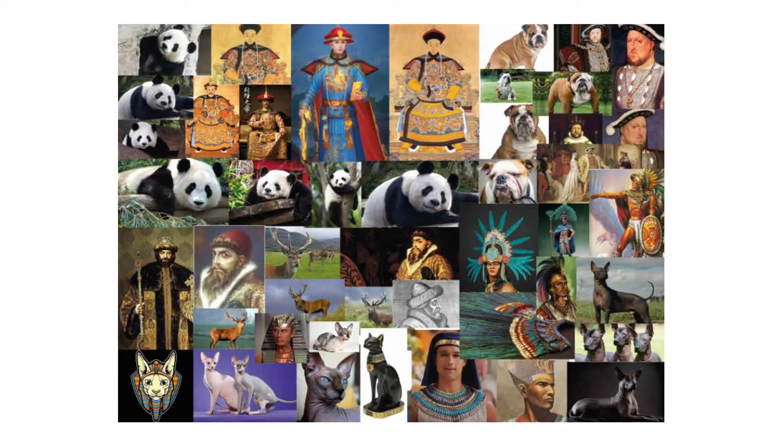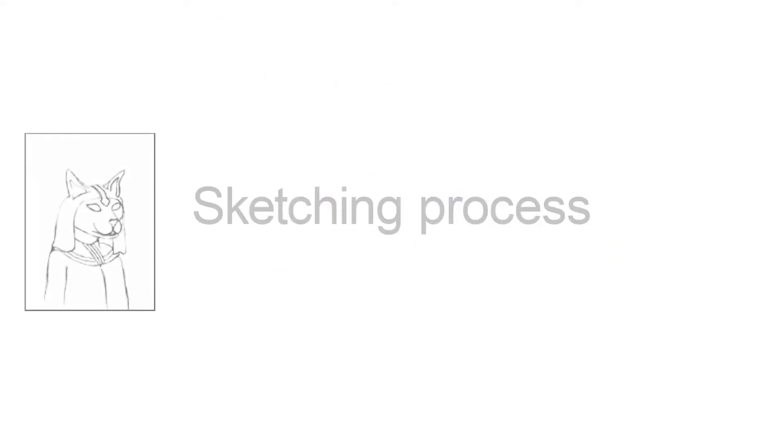The objective that Fauna Mundial has is to represent the most iconic governors of five different empires: the Aztec, Egyptian, Chinese, British and Russian empires.